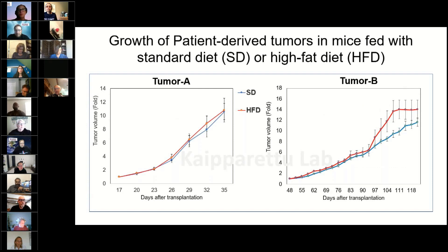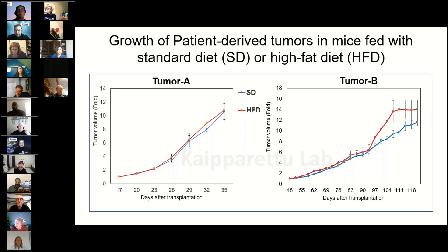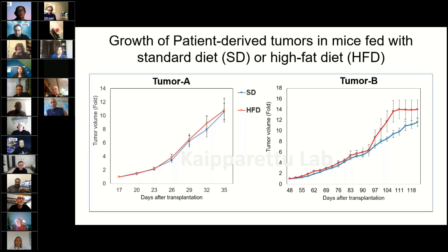In Tumor A, there was no effect of the high fat diet on its growth. But Tumor B had a bigger effect on its growth depending on the diet. The dietary modifications you make in your case may not be the same as what happened to another person. Even though genetically they are very similar — both triple negative breast cancer tumors — they responded very differently to this dietary modification. Their food, their energy source, and their response to dietary changes are all different.